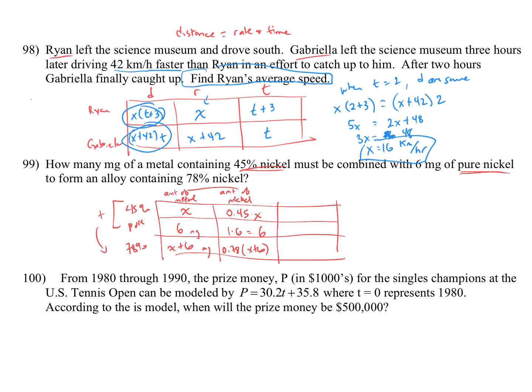Now remember we said the first two rows get added together for the third row. So in the second column, the amount of nickel, 0.45x, which is the amount of nickel in the 45%, plus six, which is the amount of nickel in the pure nickel, is going to equal 0.78 times x plus six. So this is one where we don't really need this third column, we really only just need those two.